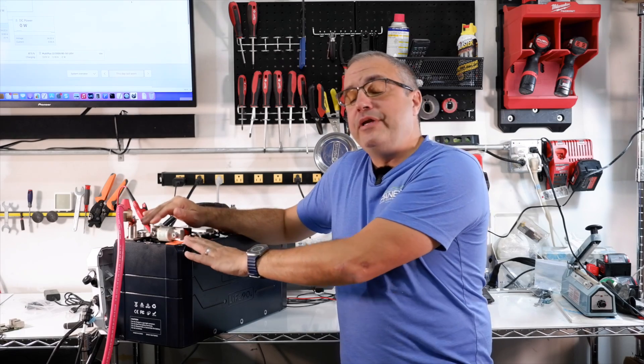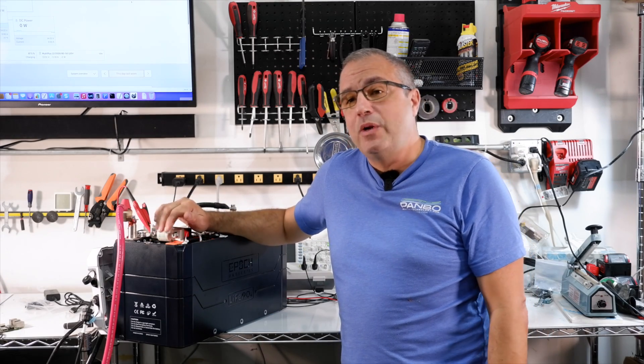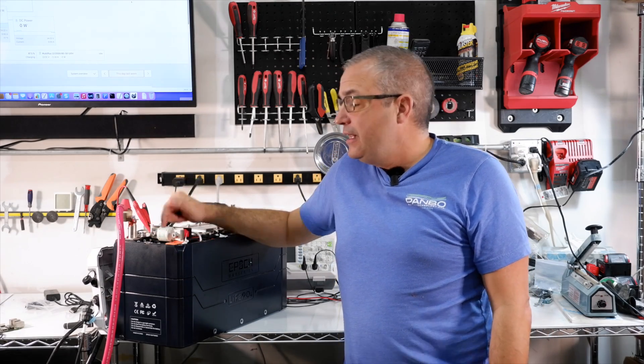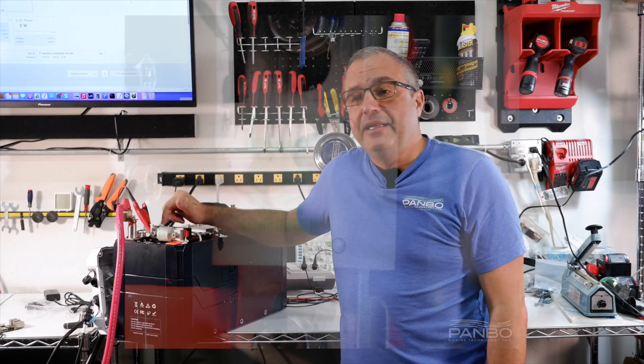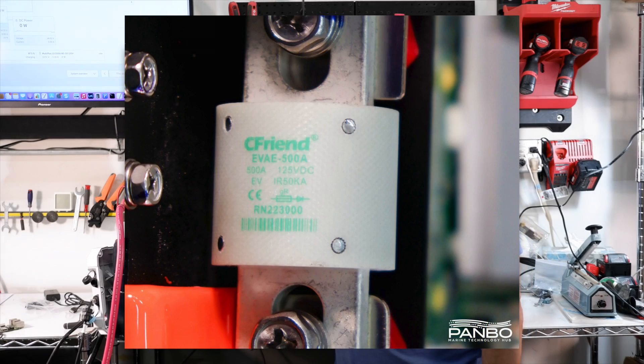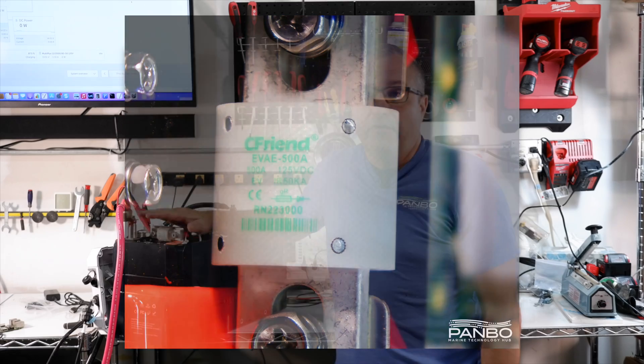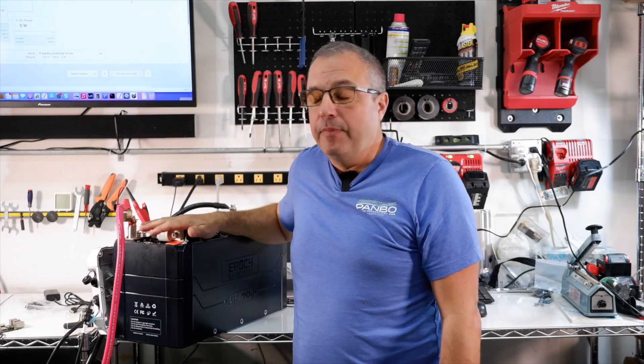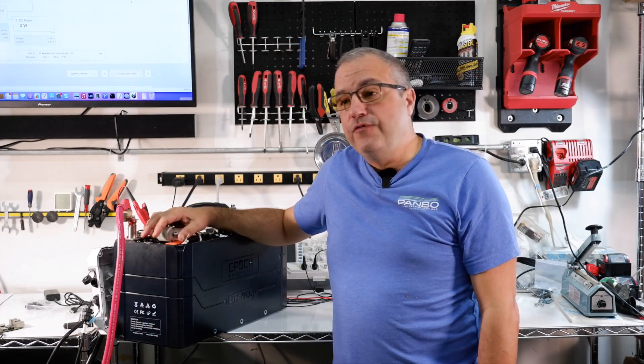Typical Marine Class T fuses are rated at 20,000 amp interrupt capability. This particular fuse is rated at 50,000 amps at 125 volts DC. That is basically the worst case scenario in terms of voltage as well as direct current for amp interrupt capability. So a very impressive fuse.